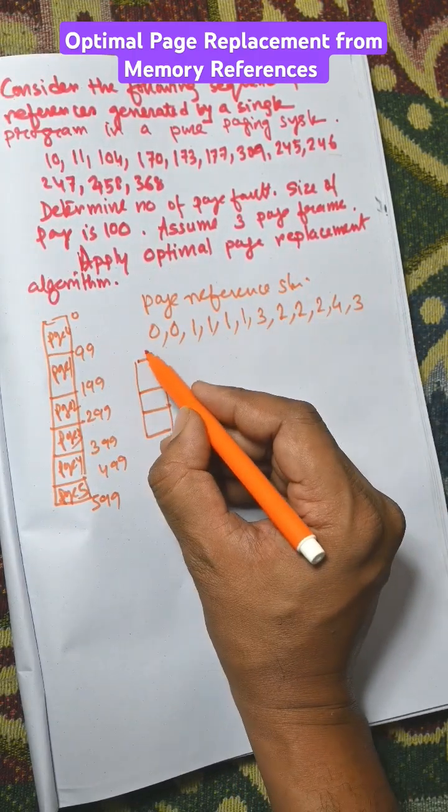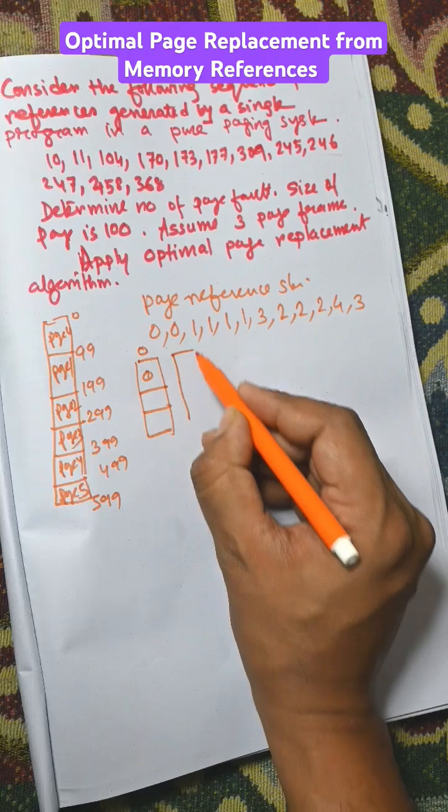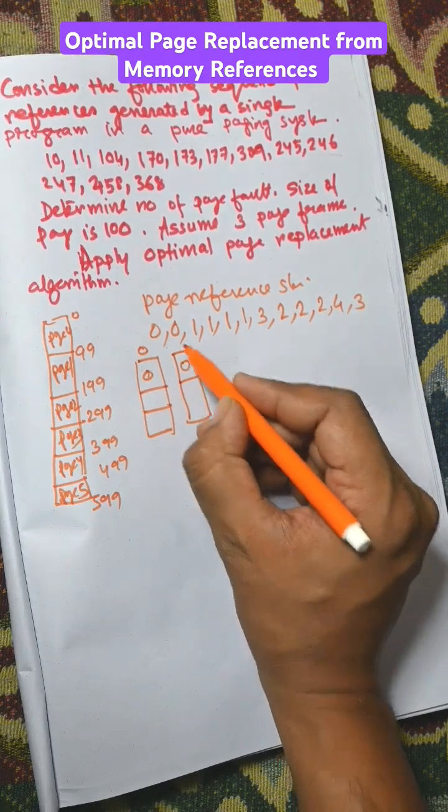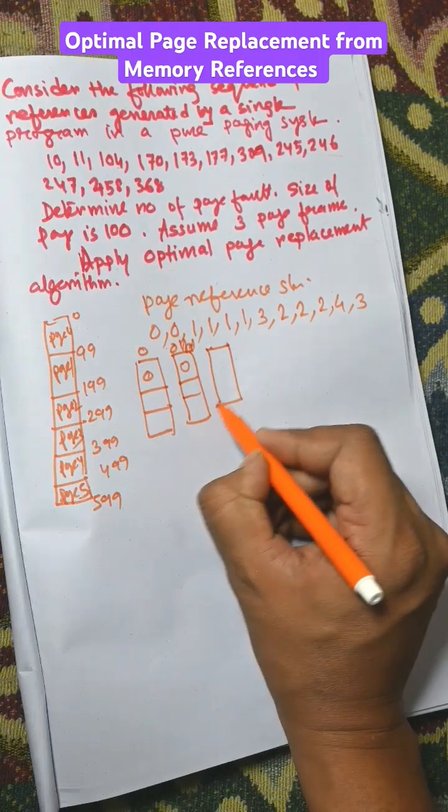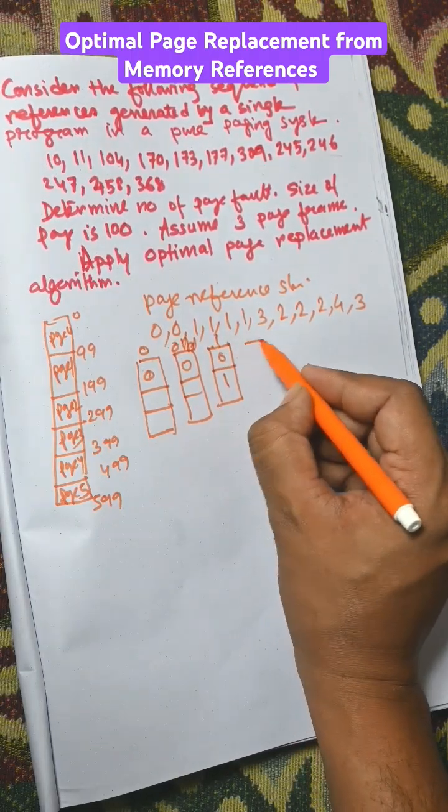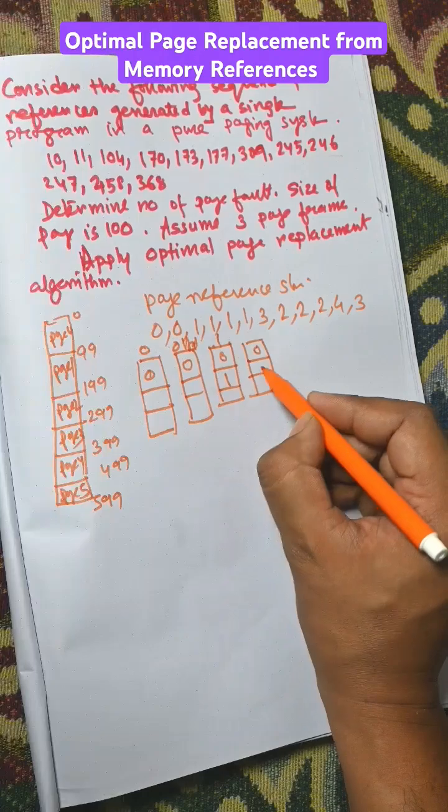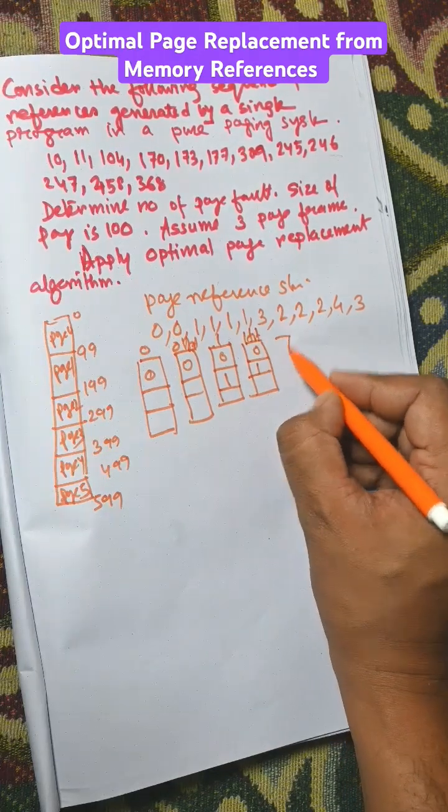First of all, 0. There are three page frames. Zero is placed here. Now 0 is available, that is a hit. Now 1, one is placed here. Next one is again 1, that is a hit.